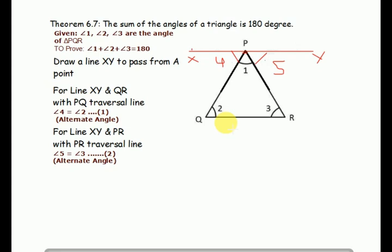We get angle 4 equals angle 2. These are alternate angles. Same here, angle 5 equals angle 3.